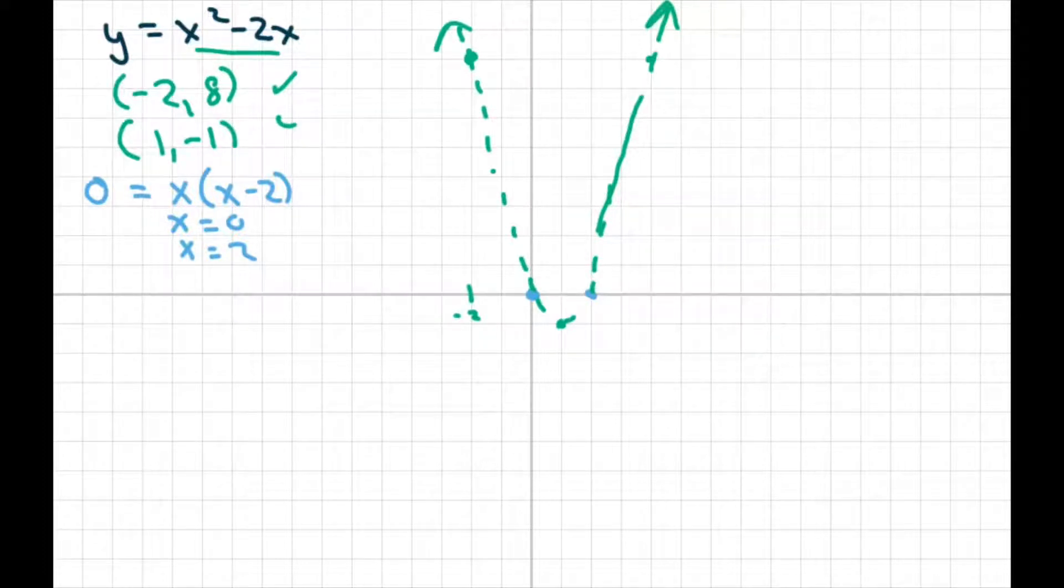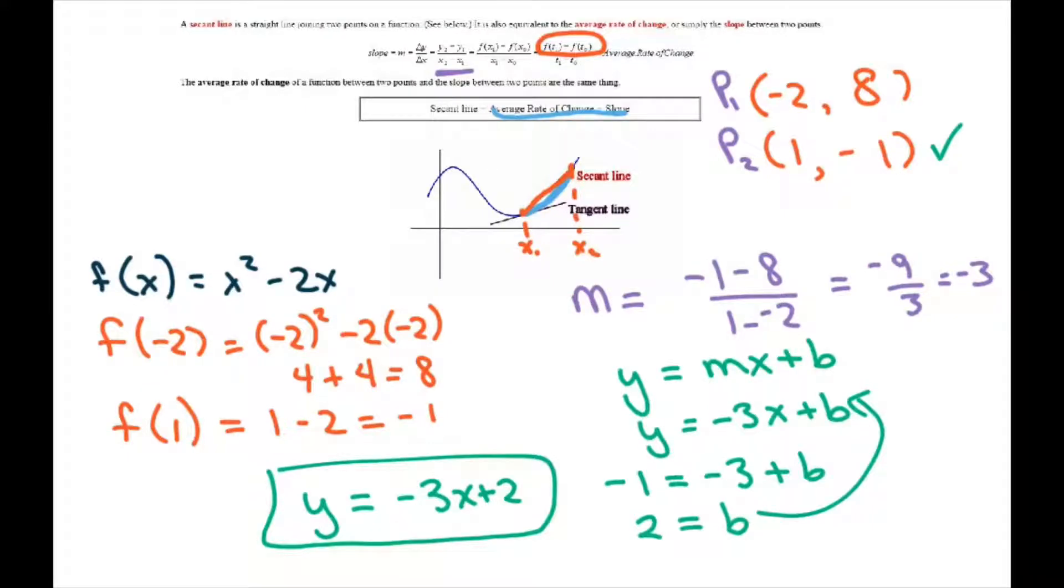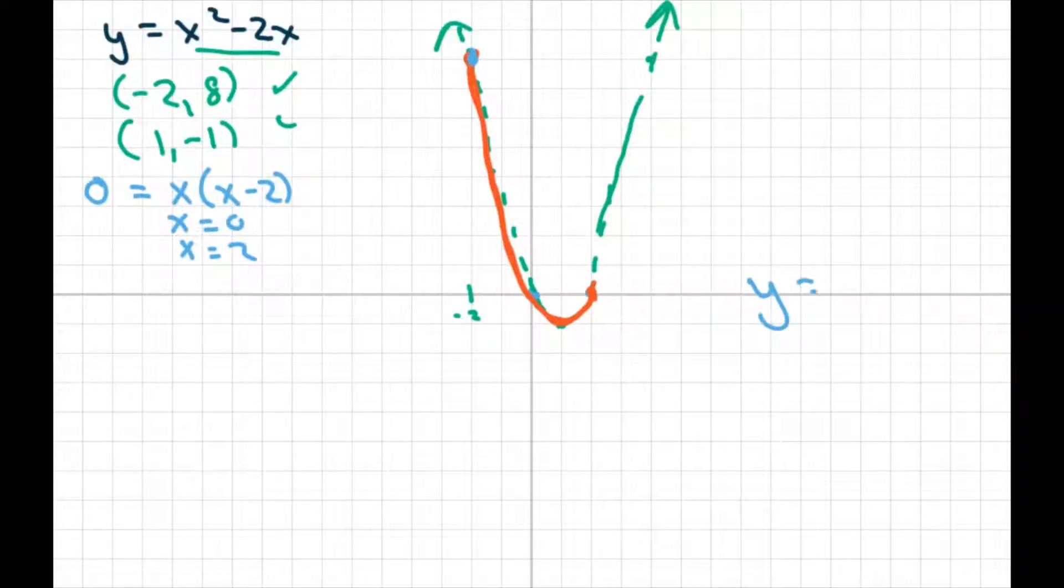But nevertheless, what we want is what's going on between this point, the average rate of change, the average rate of change from here to here. What's the average rate of change of that curve right there? And all you do is connect them. And when you connect them, and I believe our equation was negative 3x plus 2. And so y-intercept was 2. 1, 2. That helps us graph it a little bit. And so actually we're going from here to here.